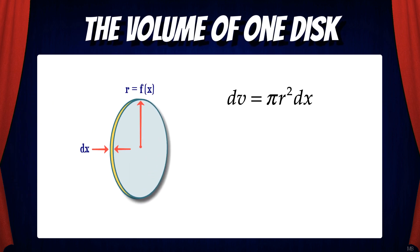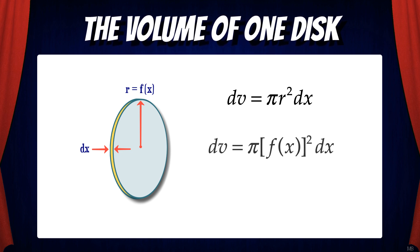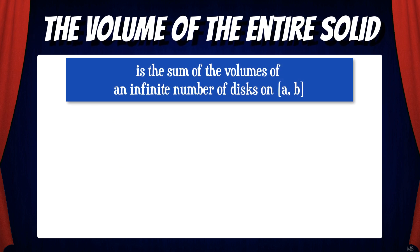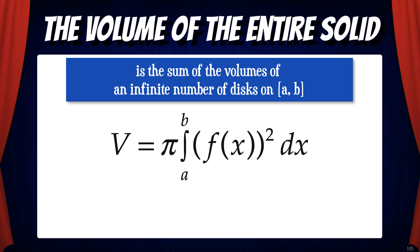Let's let the volume of one disk be called dv. So dv equals π r² times dx — that's the area of the circle times the thickness dx. But we can substitute f(x) for r, so dv equals π [f(x)]² dx. The volume of the entire solid is the sum of the volumes of an infinite number of disks on the interval [a, b], which we express as V equals π times the integral from a to b of [f(x)]² dx.